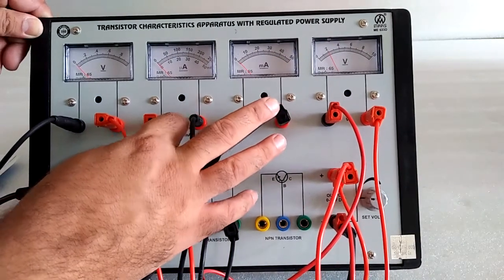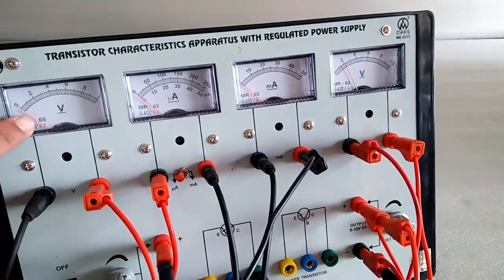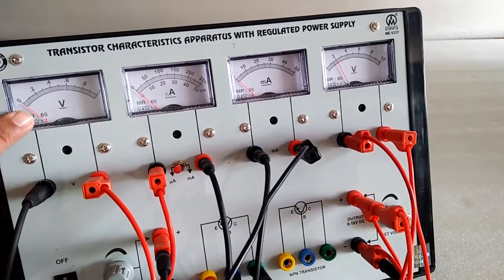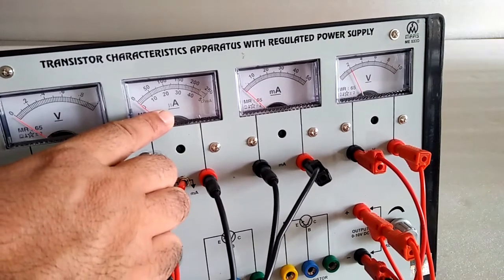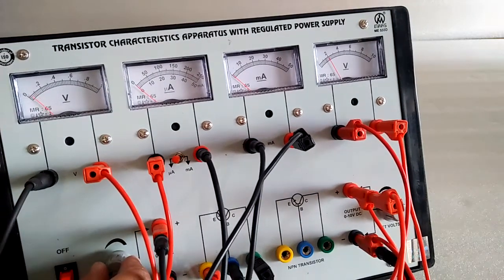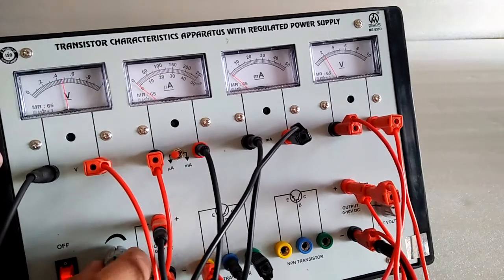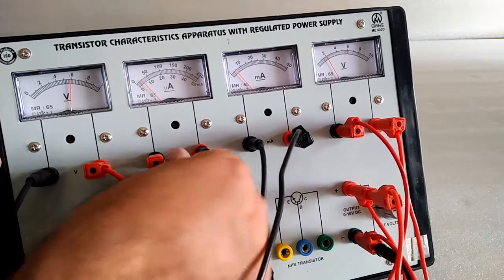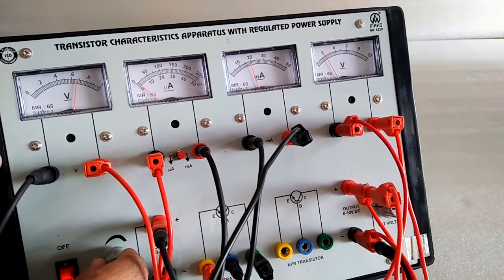It is in micro ampere. Now when we increase the base emitter voltage, current will come. Around 0.7 due to band gap, the current will rise.